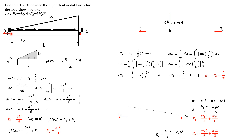We denote the equivalent nodal forces at the left end as r1 and the right end as r2. Then we consider a section cut at distance x, so that the loading we consider gives a net force on that section of t(x). We further consider a differential element of length dx, so that just to the left and just to the right the forces are equal, denoted by t(x).